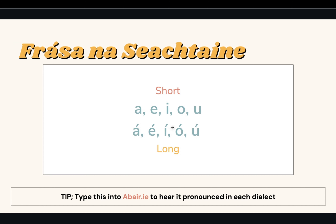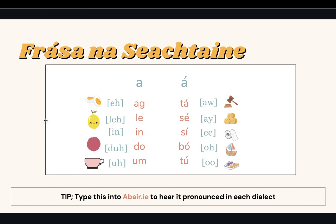So we're going to look at the difference between words with short vowels and words with long vowels in Irish — these are our most common little words, most of them prepositions or personal pronouns. The first one is 'ag' in Irish, which means 'at' and it's pronounced like 'egg' — a short E sound. So 'ag' means 'at.' For example: 'Bhí mé ag an siopa' — I was at the shop.